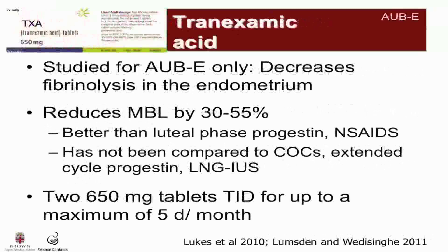Tranexamic acid has been studied only for patients with AUB-E — heavy and regular bleeding — and it works by decreasing fibrinolysis at the level of the endometrium. Studies have shown that it reduces menstrual blood loss by 30 to 55 percent and that it's better than luteal phase progestins and NSAIDs, but it hasn't been compared to combined oral contraceptives, extended cycle progestins, or the levonorgestrel intrauterine system. Patients take tranexamic acid only on the days of bleeding — two 650 milligram tablets TID for a maximum of five days per month.